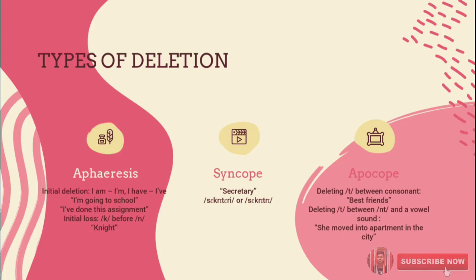Apheresis also refers to initial loss, such as the deletion of K before N in the word 'knight'. The pronunciation of 'knight' is /naɪt/, not /knaɪt/ — the K is silent.